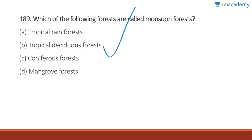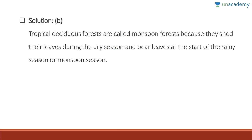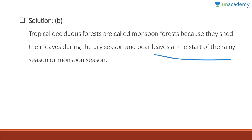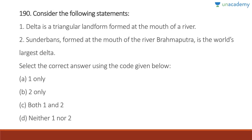Question 189: Tropical deciduous forests are called monsoon forests because they shed their leaves during the dry season and bear leaves at the start of the rainy or monsoon season. These forests are found in abundance in India.